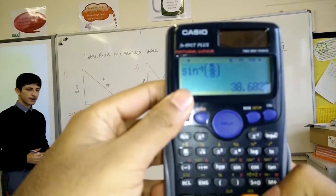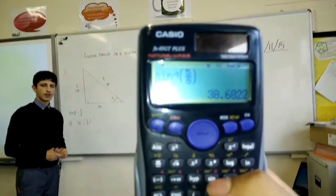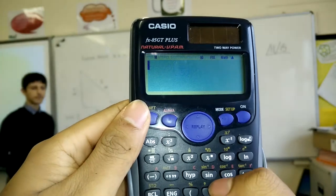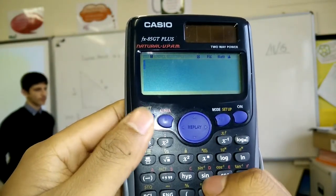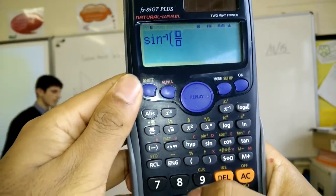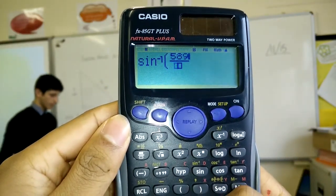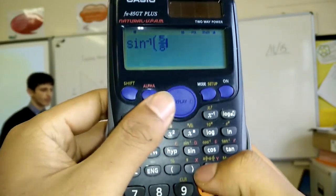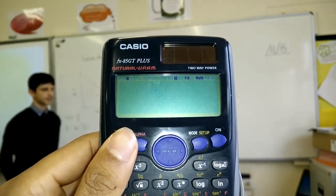It shows you the answer, 38.6822. Right, so the function is here, see just above here. So we do sine, this is normal sine, and this is inverse. And then you just get five and eight, sorry, go down eight, and then you get the answer.